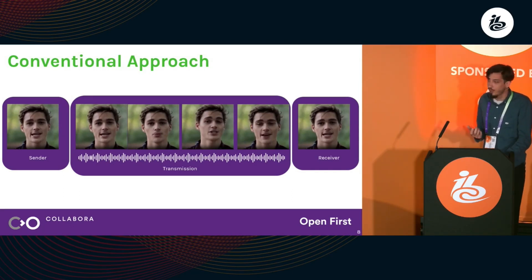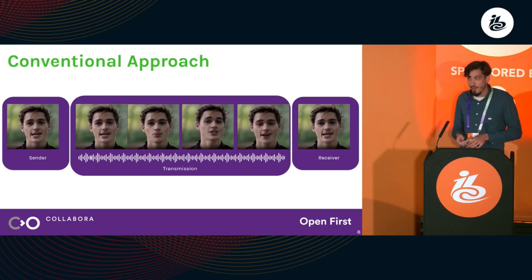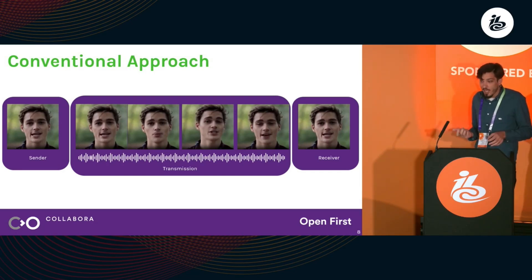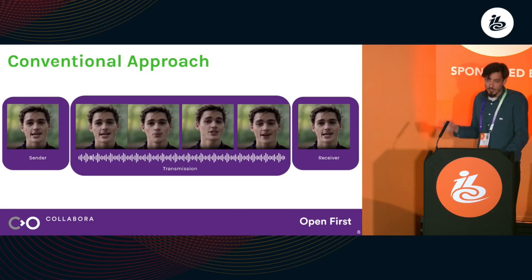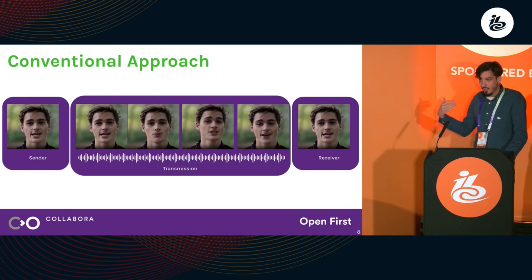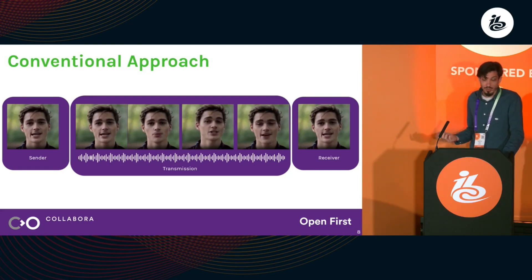Before showing our approach, let's look at the conventional setup. We have a sender and a receiver. On the sender side, we have a microphone and a webcam, and we encode the video stream using H.264 or AV1, and the audio stream using AAC, then stream it to the other side. The receiver decodes the video and audio streams, syncs them up, and shows it to the end user.